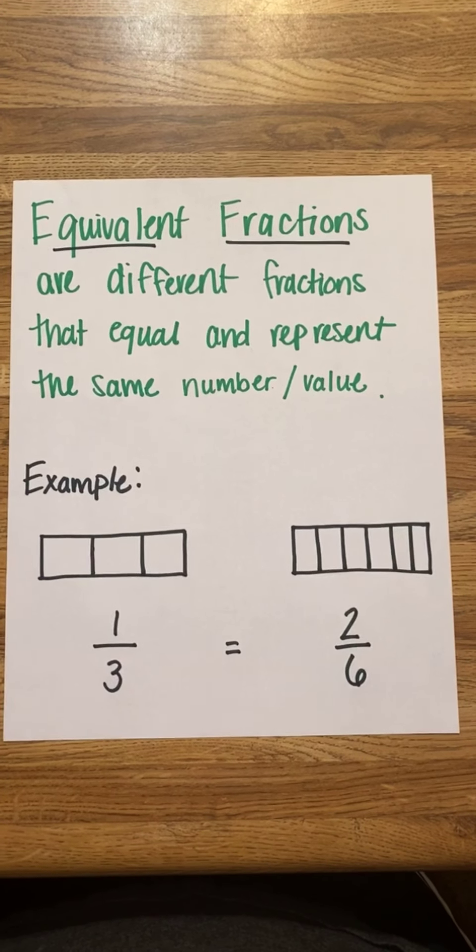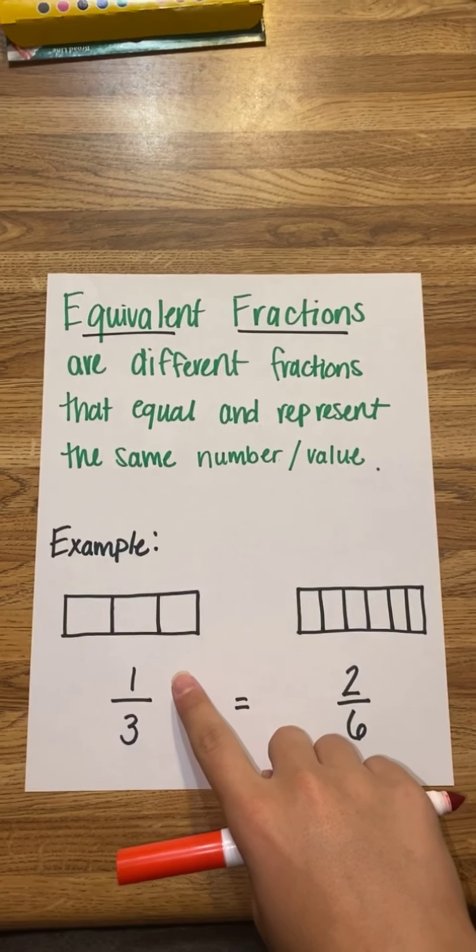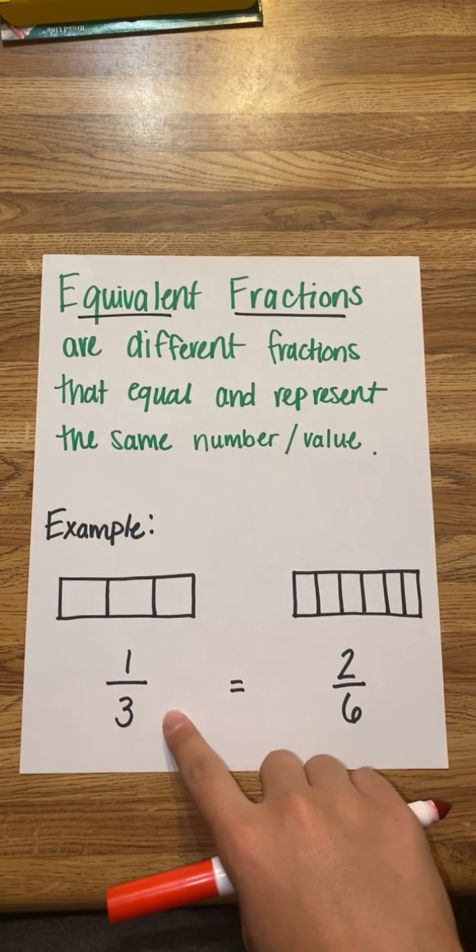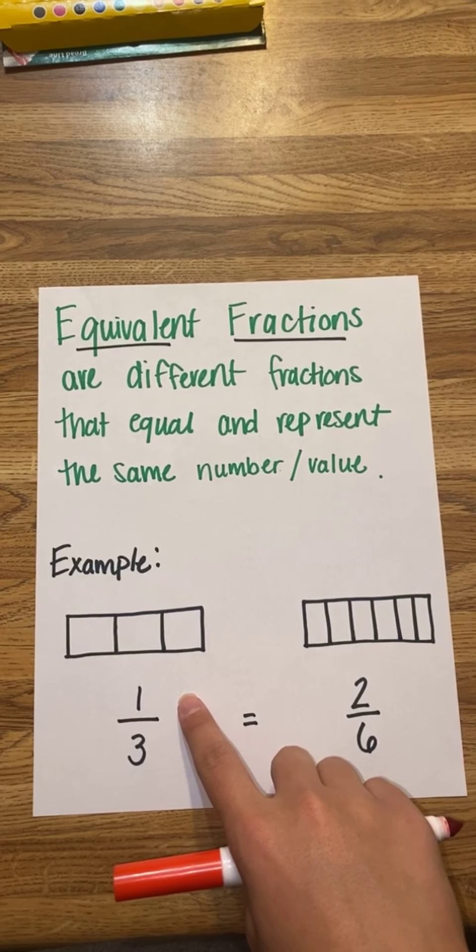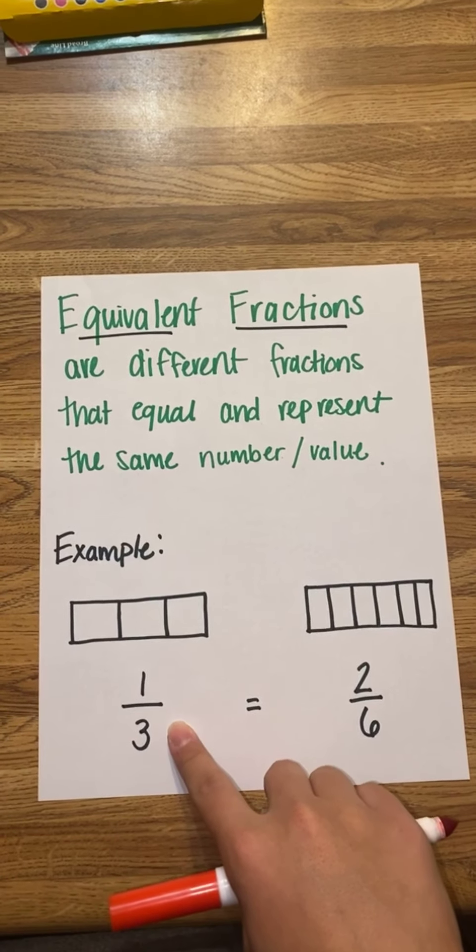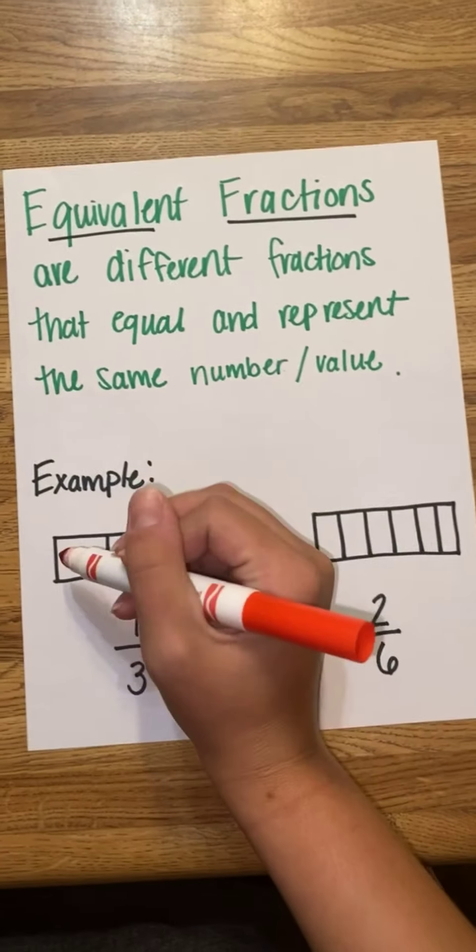Let's look at the example of 1/3 and 2/6. With our fraction 1/3, the 1 is our numerator and the 3 is our denominator. The 1 represents how many shaded pieces we have, and the 3 represents the total number of pieces: 1, 2, 3, and 1 piece is shaded.